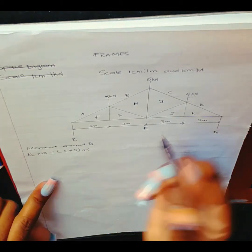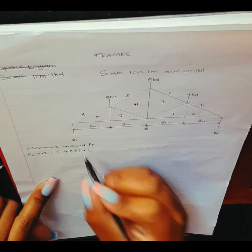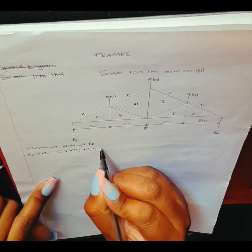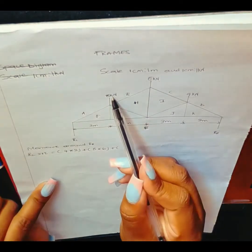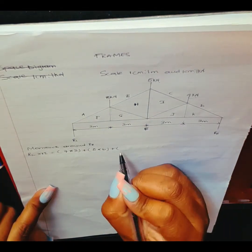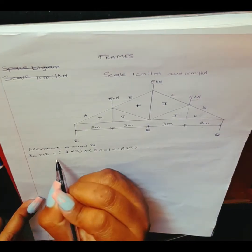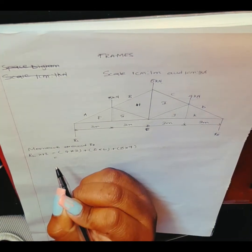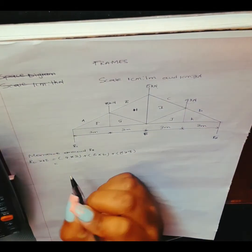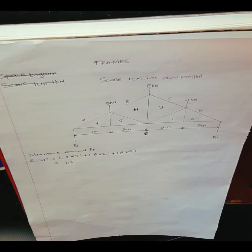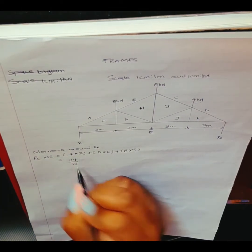Continuing the moment equation: plus 5 kilonewton × 6, plus 8 kilonewton × 9. So we have RL × 12 = (4 × 3) + (5 × 6) + (8 × 9). The answer is 114.